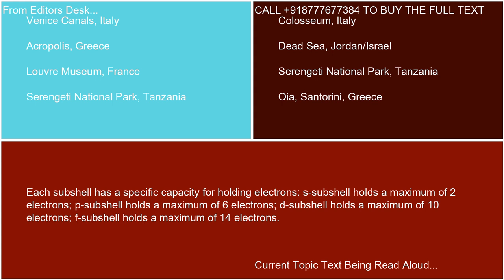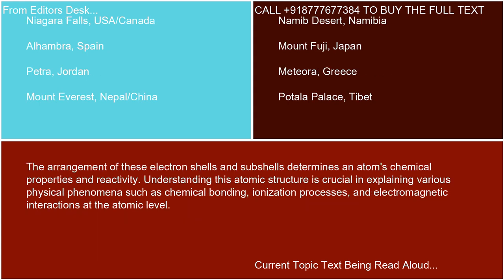The arrangement of these electron shells and subshells determines an atom's chemical properties and reactivity. Understanding this atomic structure is crucial in explaining various physical phenomena such as chemical bonding, ionization processes, and electromagnetic interactions at the atomic level.